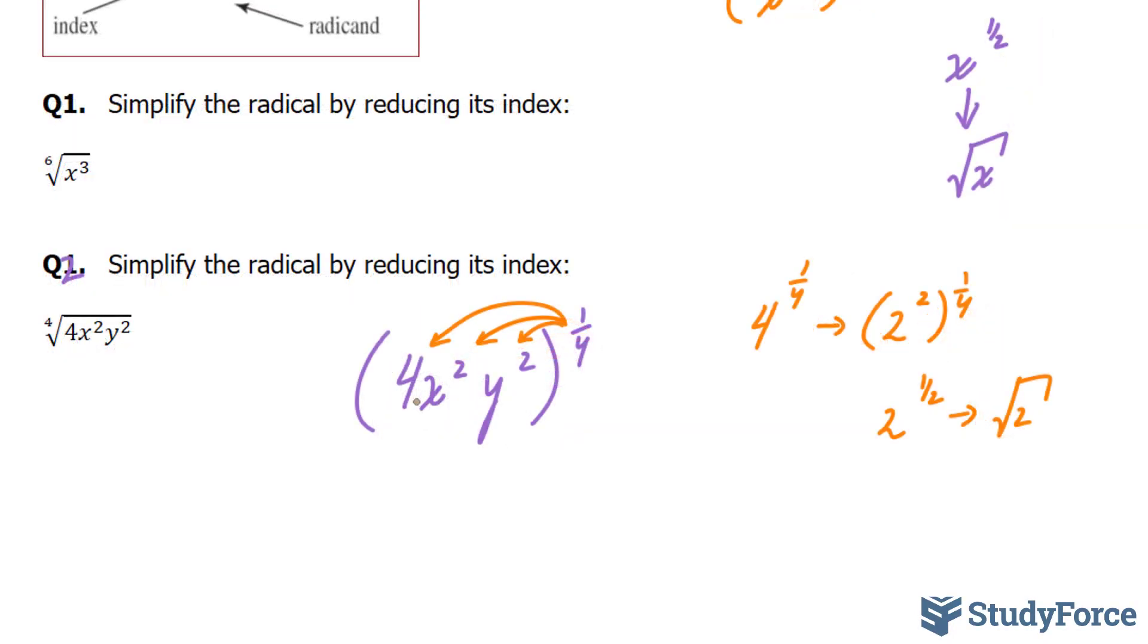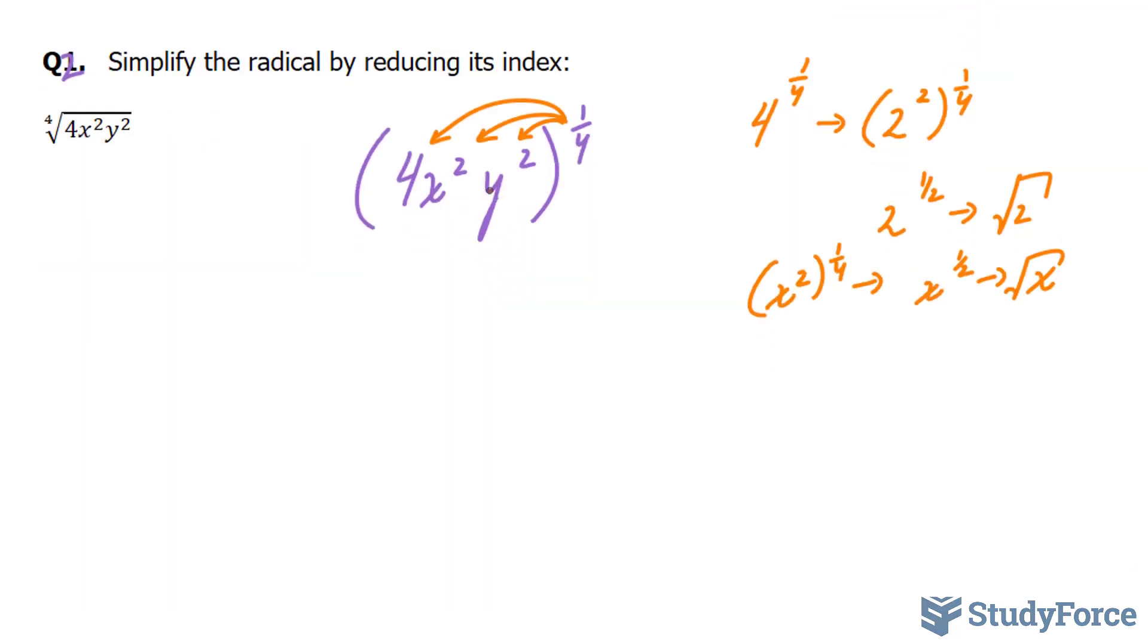Let's do the same thing with x. x to the power of two to the power of a quarter gives me x to the power of half, and that becomes the square root of x. The same thing with y to the power of two. That becomes the square root of y.